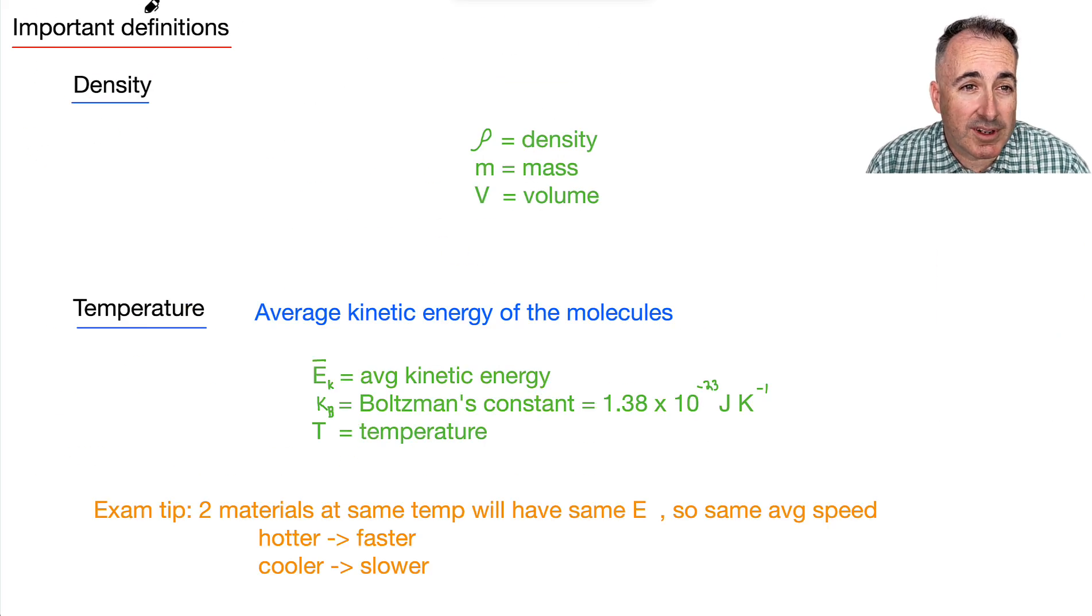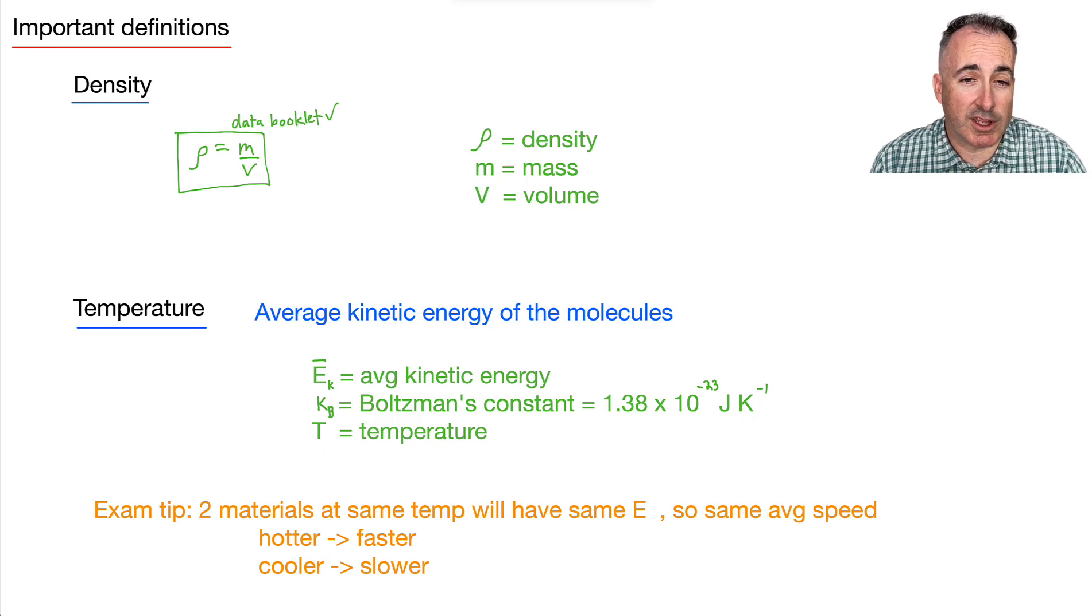So let's talk about some important definitions. We have density. And density is given by this symbol rho right here. And luckily in your data book, you have this too. It goes density equals mass divided by the volume. This you get on your data booklet. Now what are the units? Well, mass is in kilograms. Volume is in meters cubed. So that means density, which is this over this, must be kilograms over meters cubed.